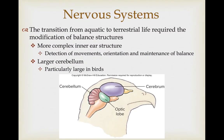The transition from aquatic to terrestrial life also required modification of balance structures. Tripping in water is not as consequential as tripping on land, so this led to a much more complex inner ear structure for detection of movements and greater finesse in orientation and balance maintenance. For integration of this information, you also need a larger part of the brain responsible for balance — the cerebellum. The cerebellum is particularly large in birds, making up a large fraction of the brain, because of the importance of maintaining subtle cues of balance and orientation during flight.